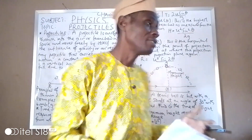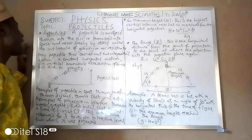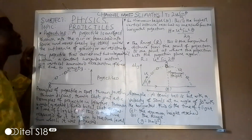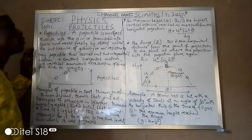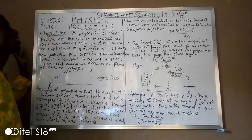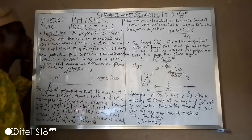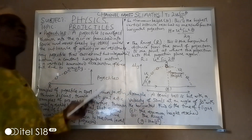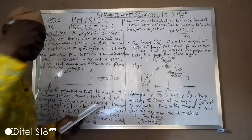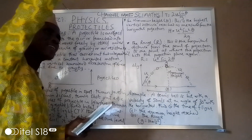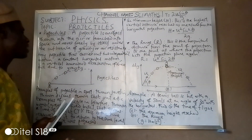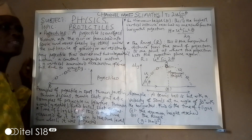What is a projectile? A projectile is an object thrown into the air or launched into space, and moved freely by itself under the influence of gravity or air resistance. I repeat: a projectile is an object thrown into the air or launched into space and moved freely by itself under the influence of gravity or air resistance. When we throw an object into the air and it moves against gravity and then lands — that's what we call a projectile.